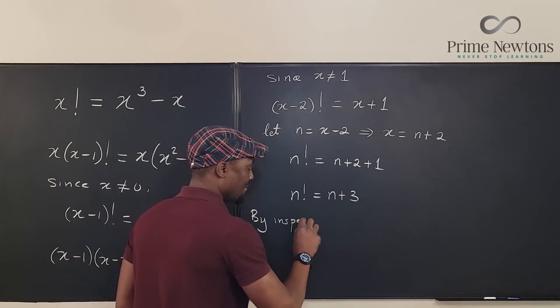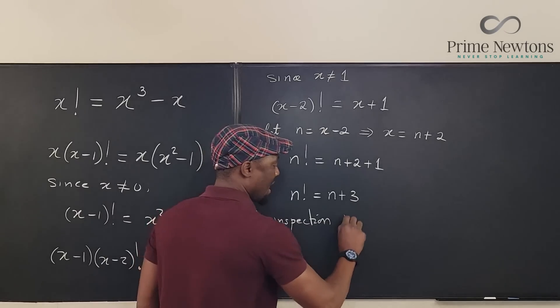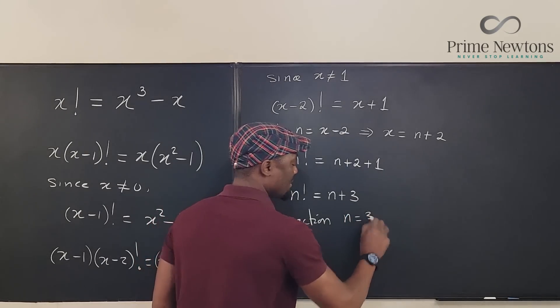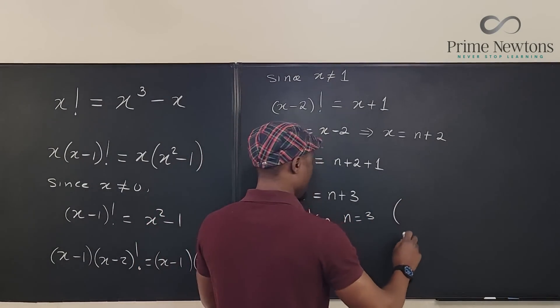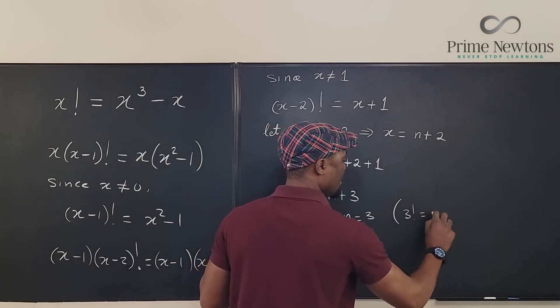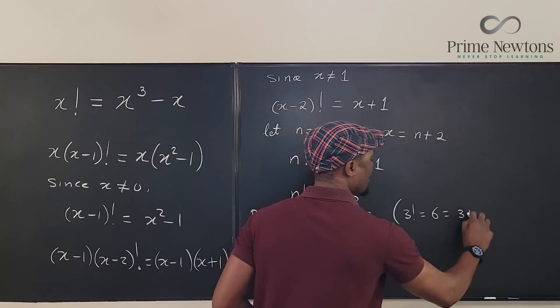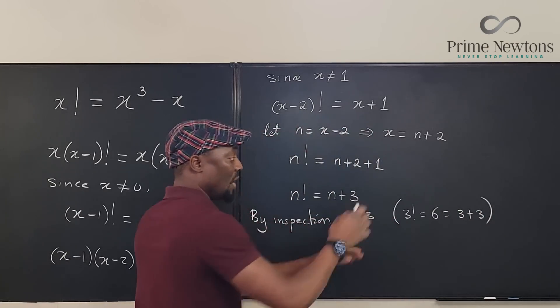By inspection, n equals three. We have three factorial equals six, which is equal to three plus three. So we've gotten our n.